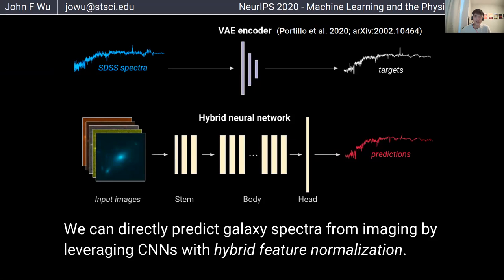In the work I'm presenting today, we've gone a step further. Rather than predicting just some galaxy property derived from spectroscopy, we can directly predict the spectrum itself. In the top row, you can see we've used a pre-trained variational autoencoder to convert galaxy spectra observed by the Sloan Digital Sky Survey into their latent space representations, which can then be decoded back into a Sloan spectrum. In the bottom row, we've trained a CNN to predict these latent variables directly from galaxy images, and we can decode the predicted latent vectors back into galaxy spectra, which are compared with the ground truths on the right.